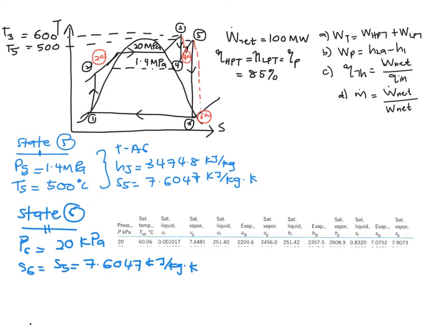Since you are given pressure and entropy, we are going to refer to table E5. If you double check the entropy range, you will see that S6 at 7.6047 is in between these two points. Therefore, the sketch is correct - you have state 6 in the mixture region.